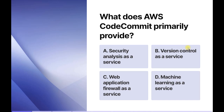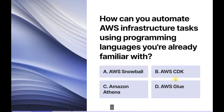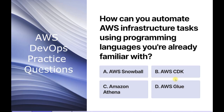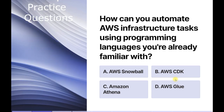In this question they are asking: how can you automate AWS infrastructure tasks using programming languages you are already familiar with? The options are: AWS Snowball, AWS CDK (Cloud Development Kit), Amazon Athena, and AWS Glue service. AWS Snowball is a data transfer solution which supports up to petabyte-scale data.